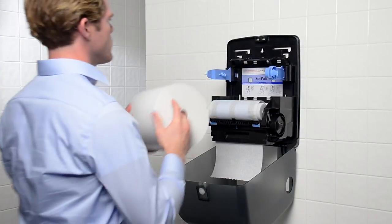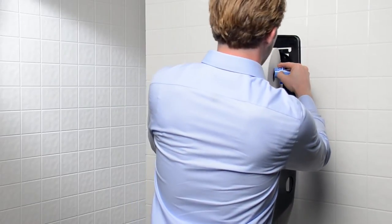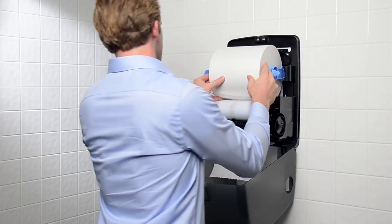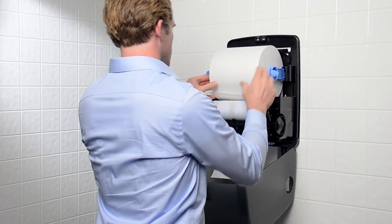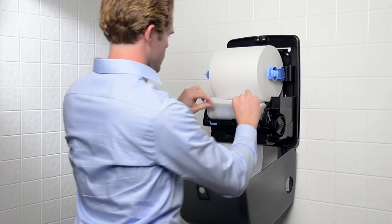With this small stub roll in the bottom of the dispenser, load the new SoftPull hardwound roll onto the roll supports, positioning the new roll so that the towel tail feeds from underneath.